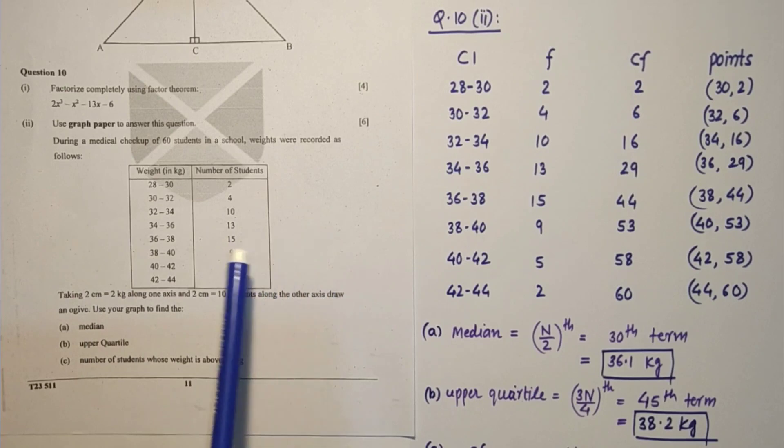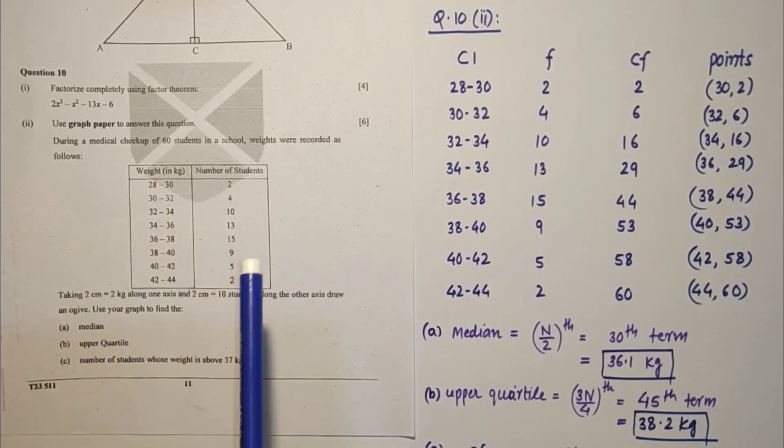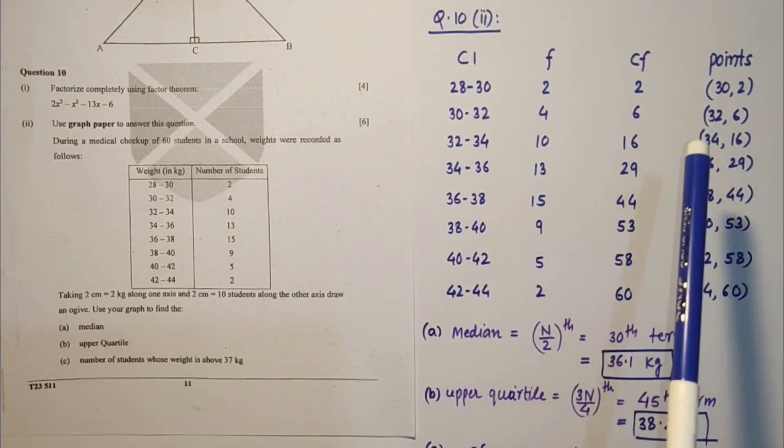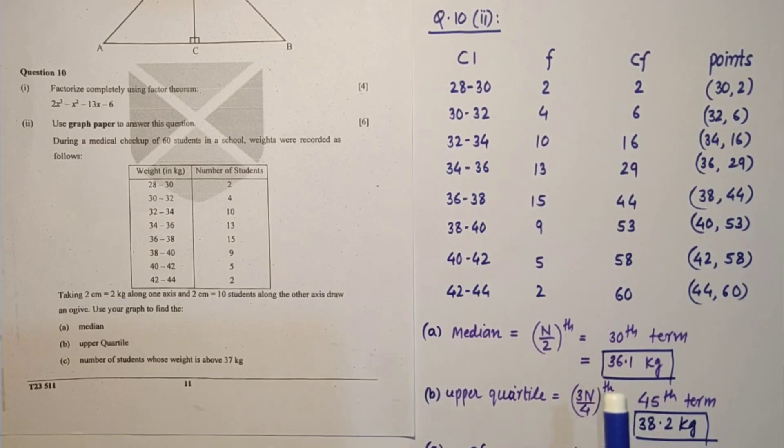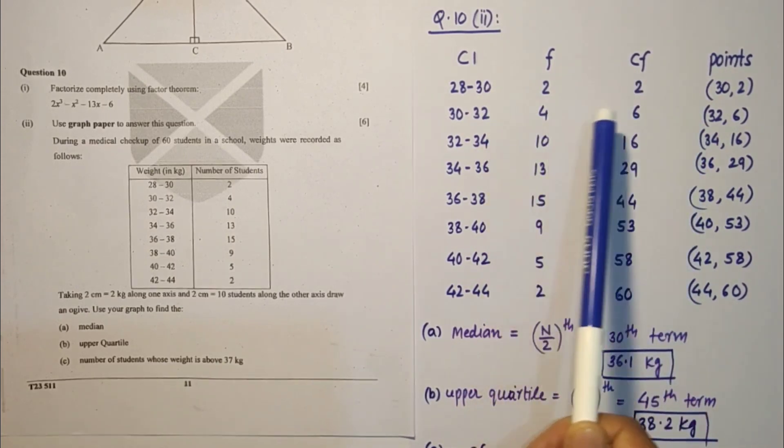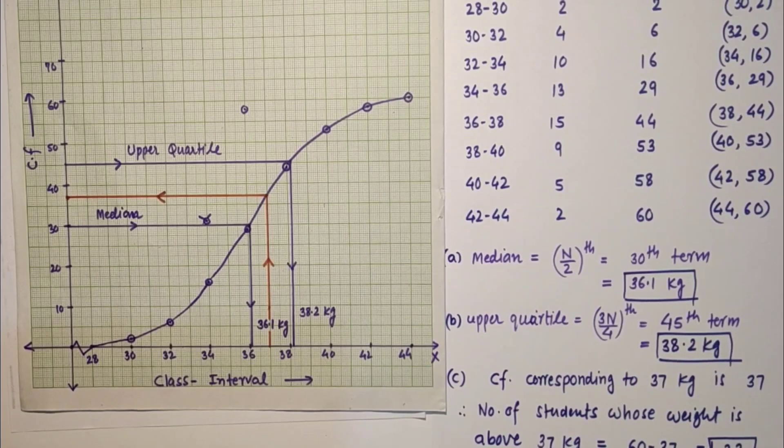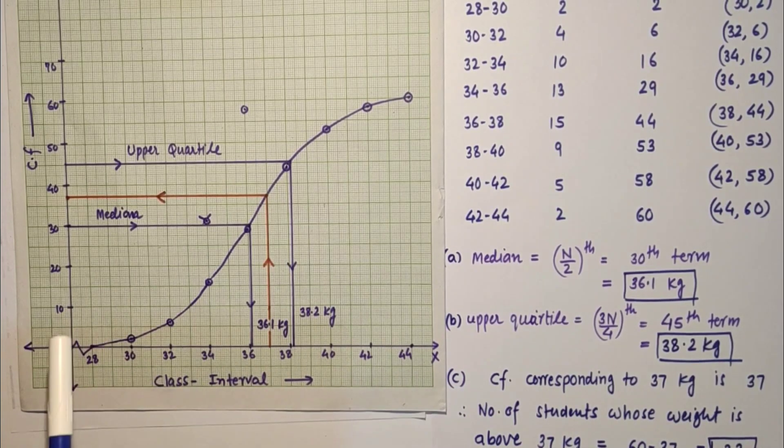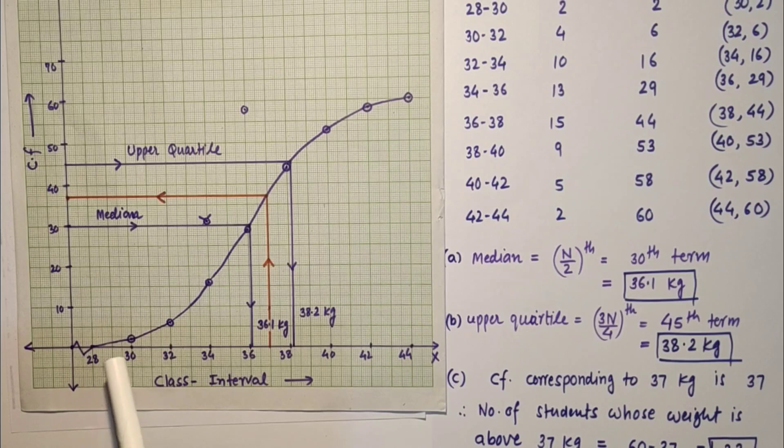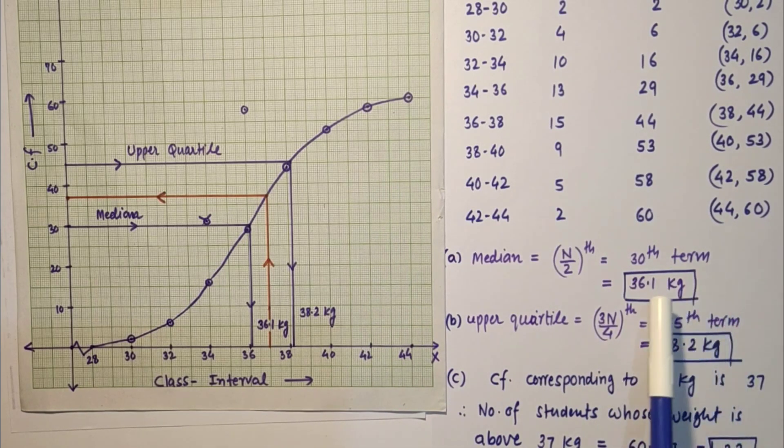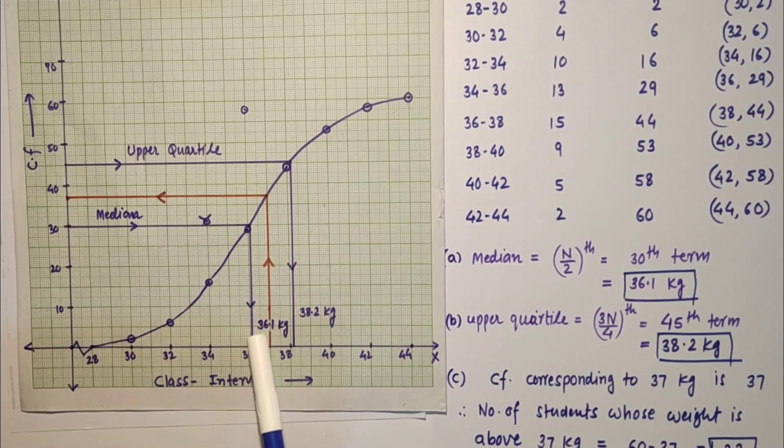Question number 10 second sub part. We have to use graph paper for this. Here is class interval, frequency, cumulative frequency, and points to be plotted. 32, 6 and these points are here. After doing that, we have to use graph. Here is graph, class interval here, cumulative frequency. 28, 30 up to 38, 44. To get median, n by 2th term that is 30th term. 30th term from here is 36.1 kg, which is median.